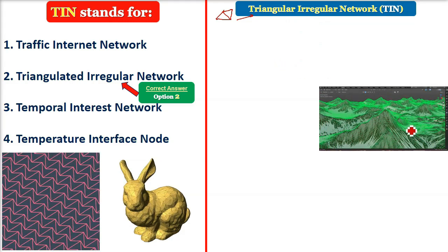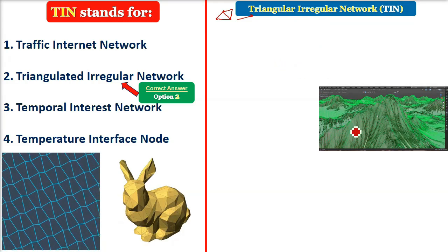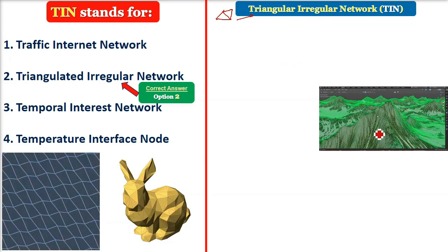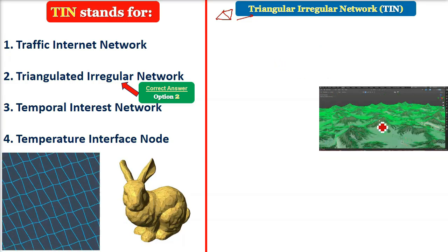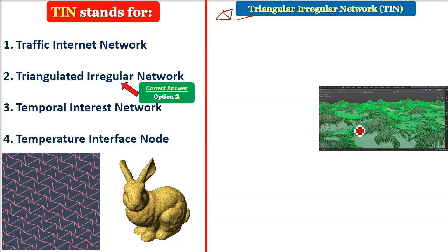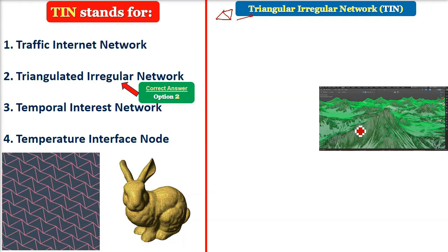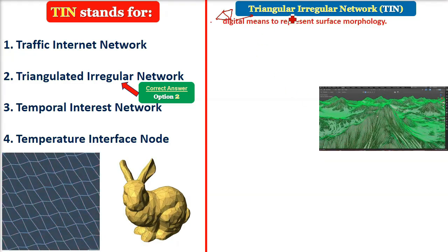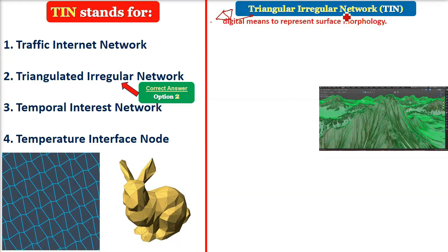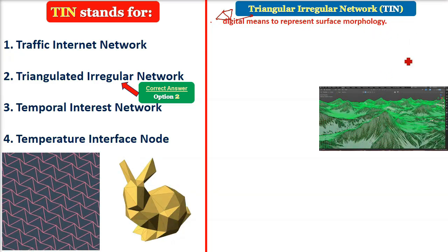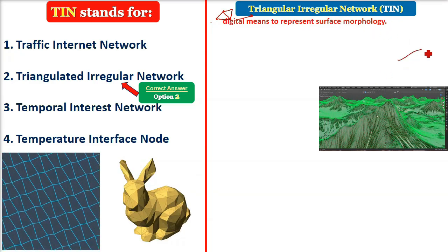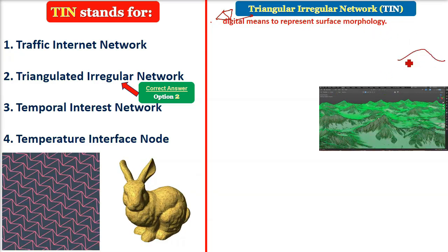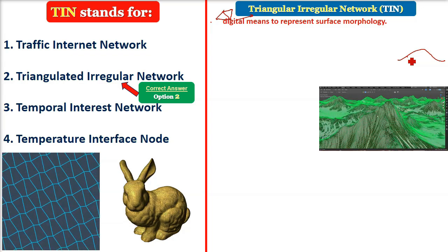If you see here, this green mesh is nothing but the TIN — triangulated irregular network. So whether in gaming or in GIS, TIN means digitally representing surface morphology.